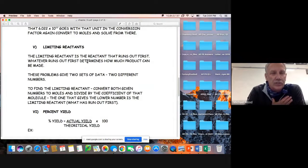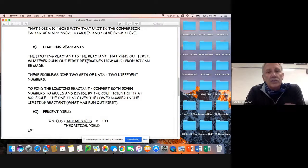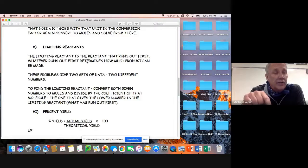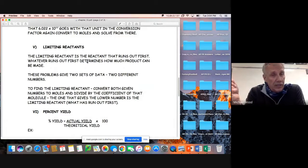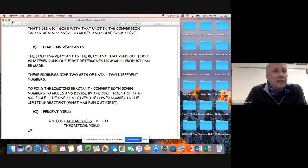A lab or activity we're going to do is we're going to make s'mores. You're going to have graham crackers, chocolates, and marshmallows, and I'll tell you the combination I want you to do, and you're going to combine them, and you're going to run out of one of them. Whatever you run out of determines how much you make, and that's where the whole idea of a limiting reactant comes from.